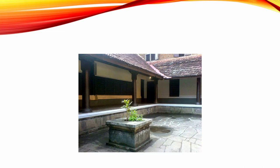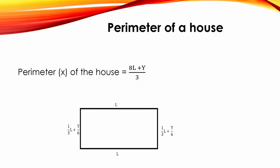If the desired length is L (measured in kol, the measurement unit for length) and the Yoni number (Yoni Sankhya) is Y, then the perimeter of the house is (8L + Y) / 3. The text also presents an alternative method: choosing the ratio of length and breadth from a list of prescribed proportions, from which the Yoni and the perimeter can be derived.